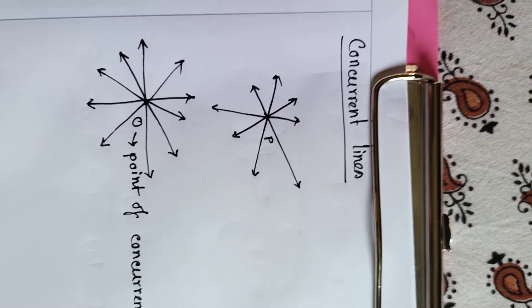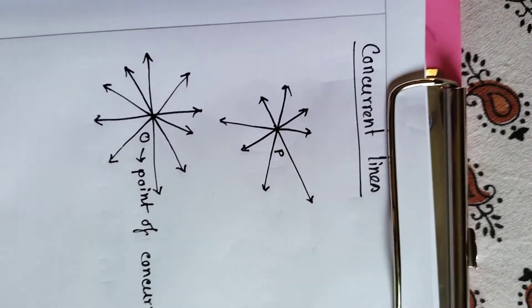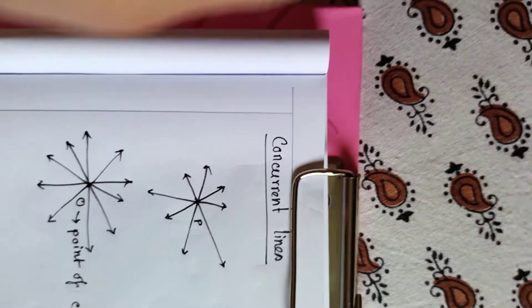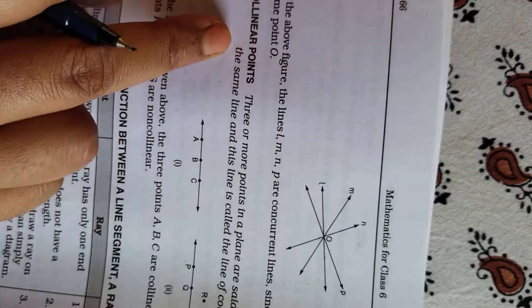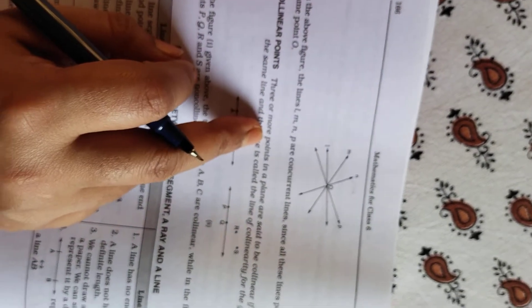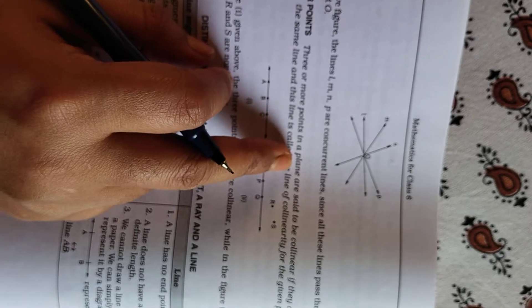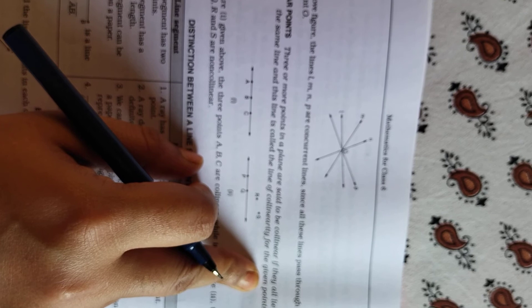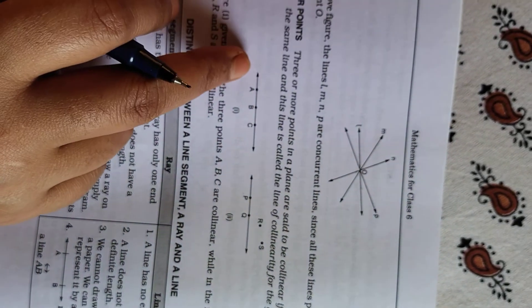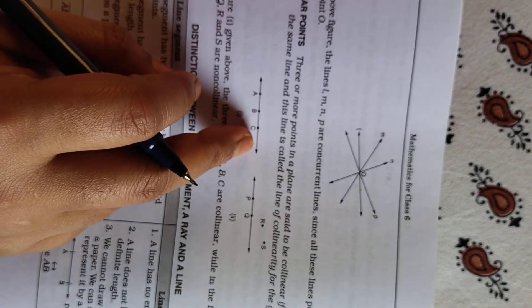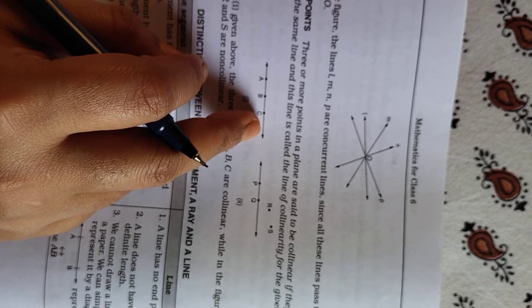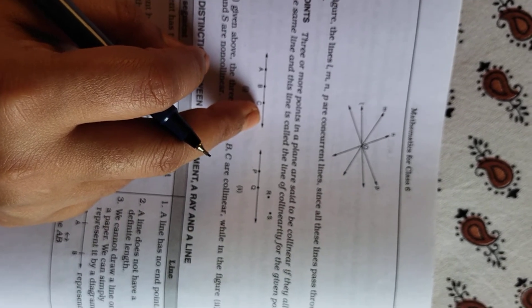Now, what are collinear points? Look at your textbook. Three or more points in a plane are said to be collinear if they all lie on the same line, and this line is called the line of collinearity for the given points.